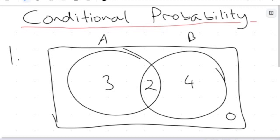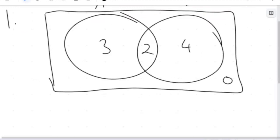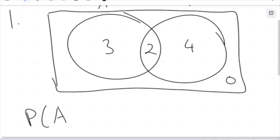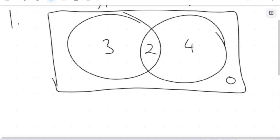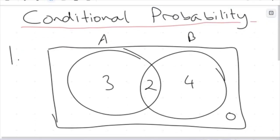We also defined some notation — the probability of one thing given another event. Now that you have a good background into how we can go about these types of questions, we're going to do some practice questions looking at both Venn diagrams and two-way tables, which are two methods we learned about in the previous probability series about how we can represent data to calculate probabilities when measuring two different things at once.